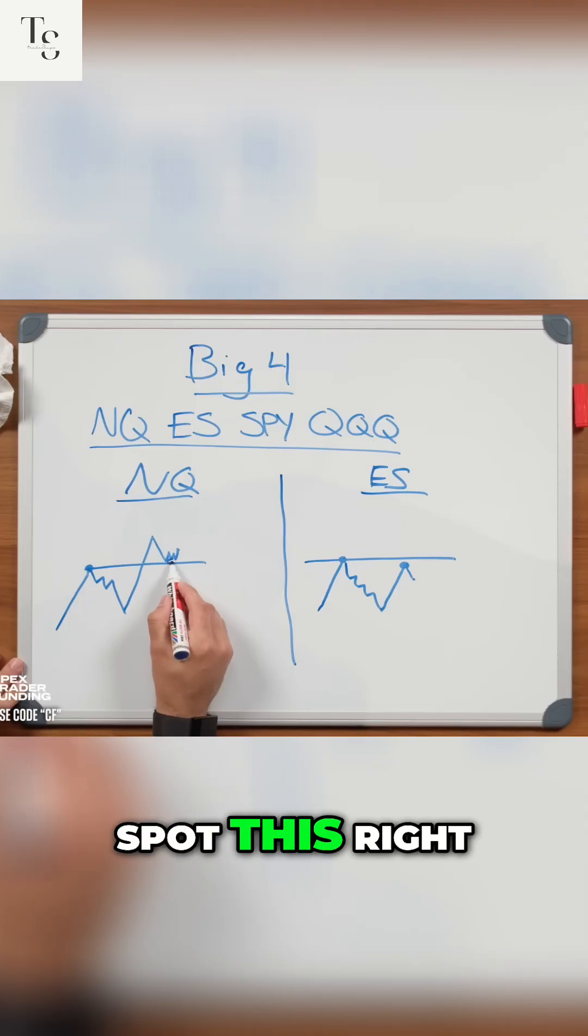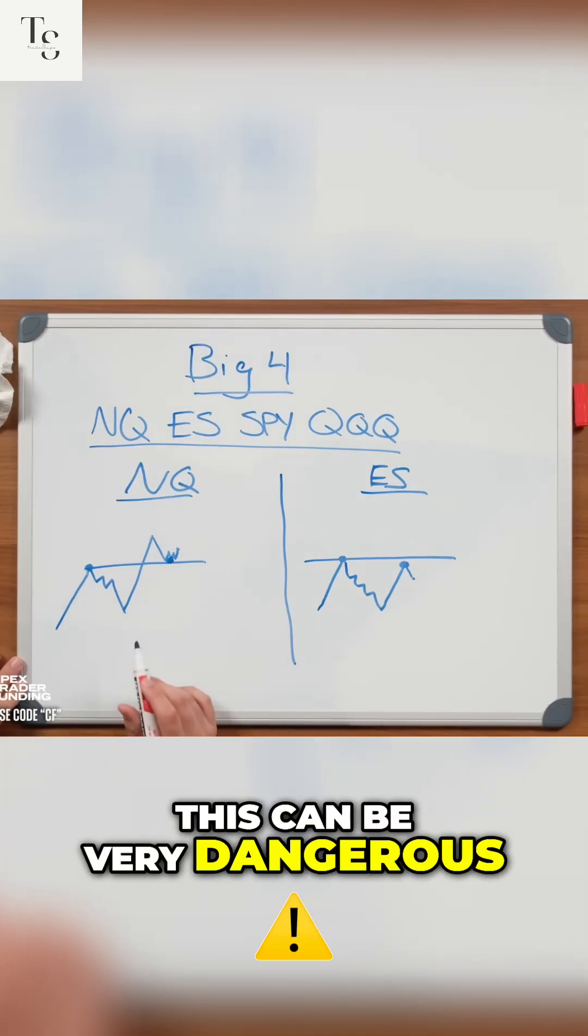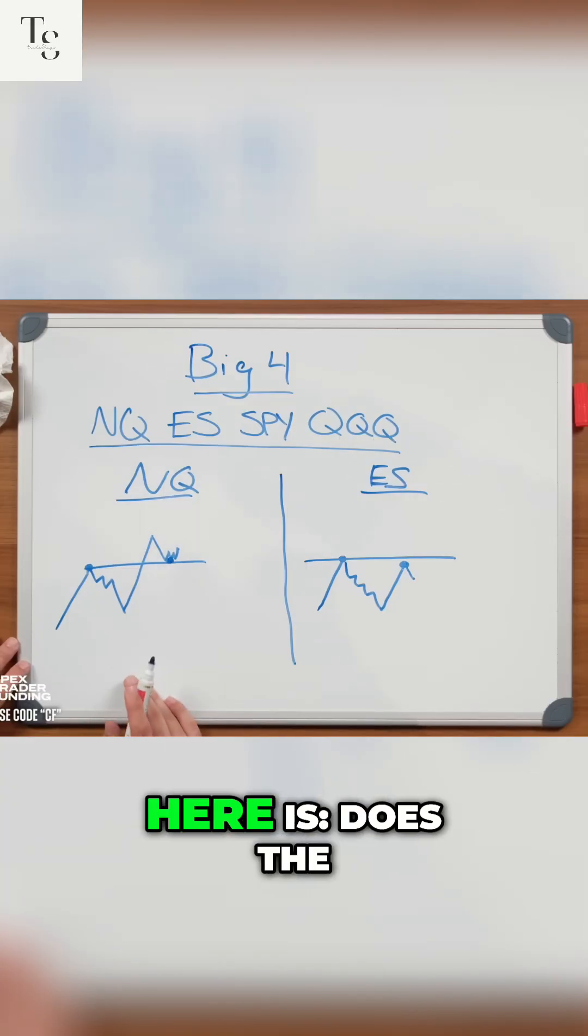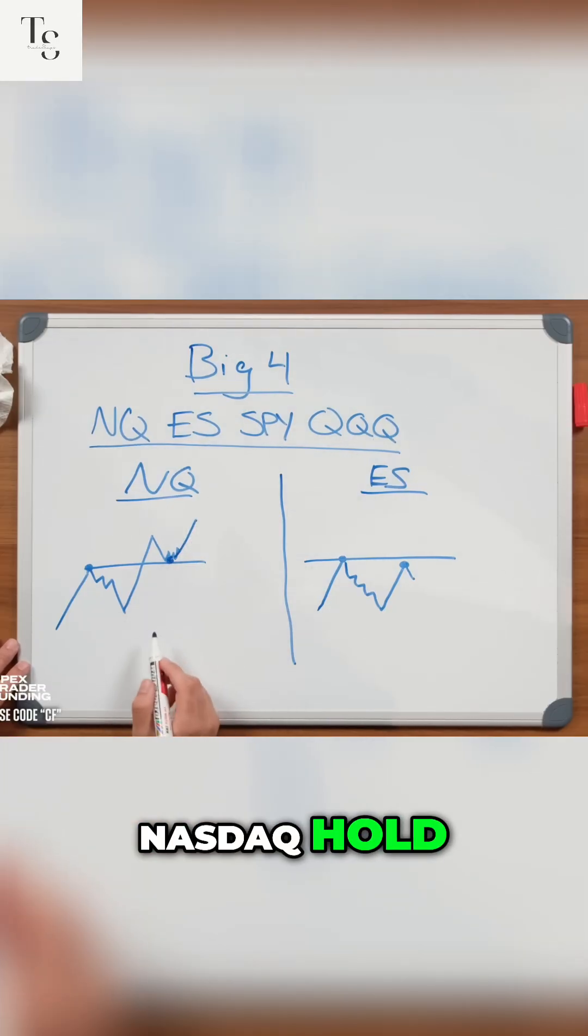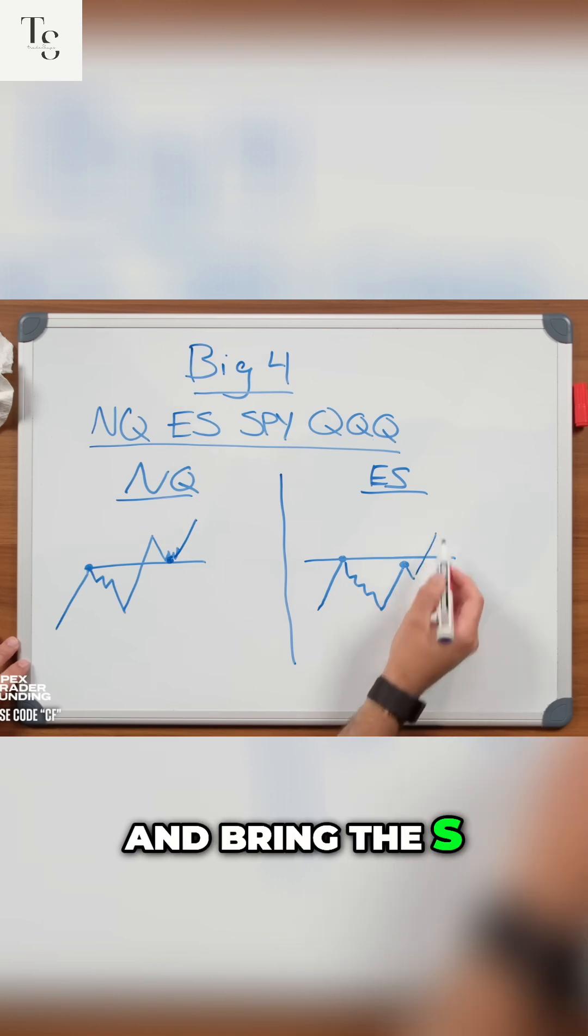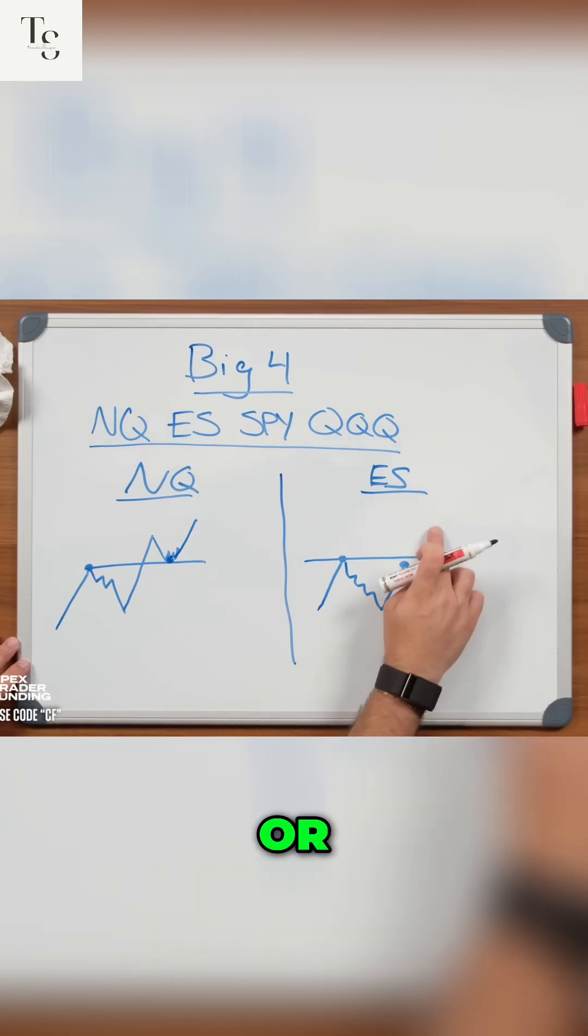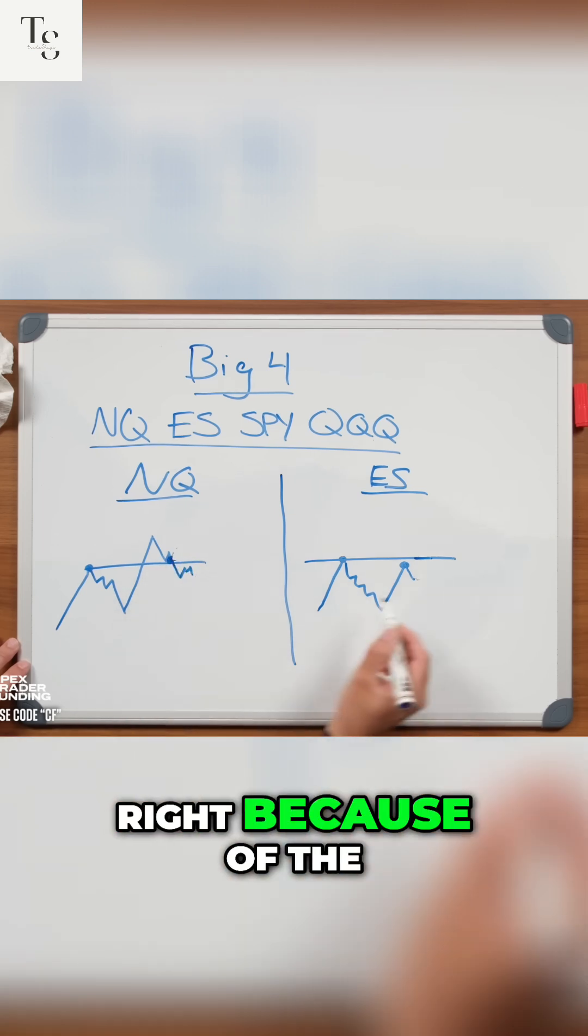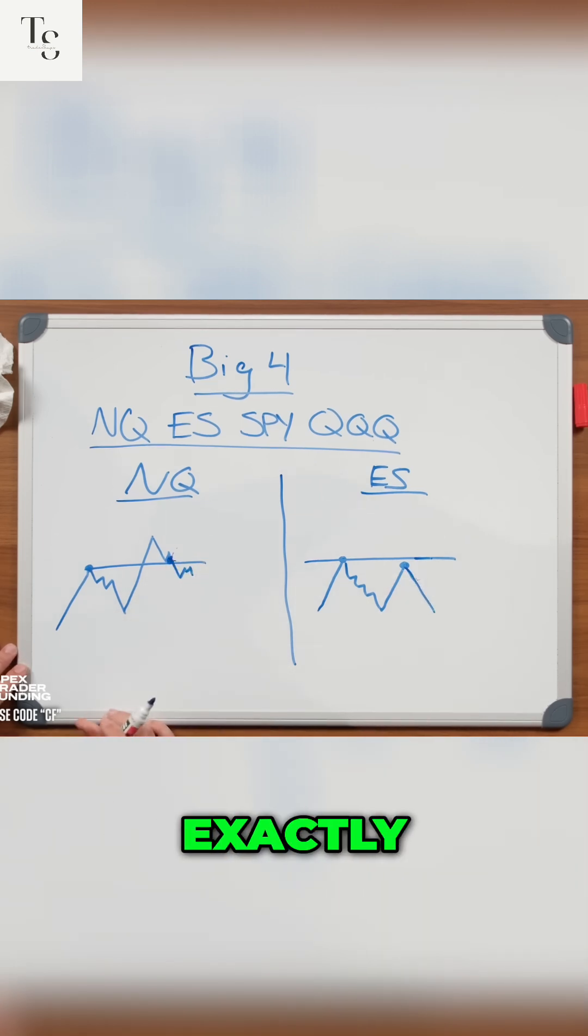When you spot this, it can be very dangerous and difficult to trade. The question is: does the NASDAQ hold and bring the S&P with it, or does the NASDAQ fail back under because of the S&P failing?